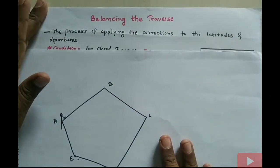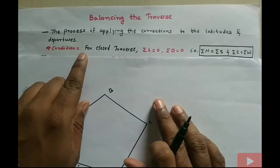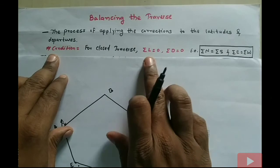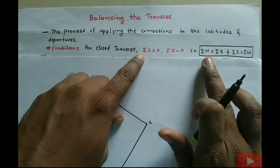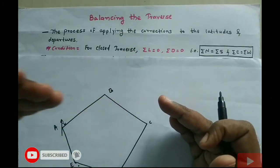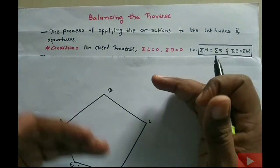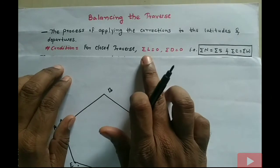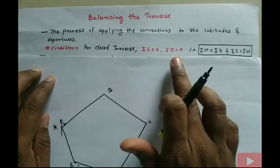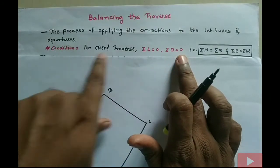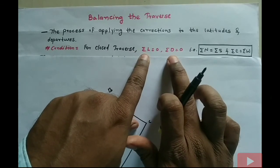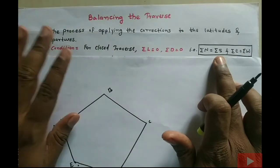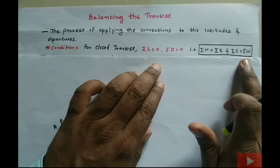There is a general condition for a closed traverse: for all lines of the traverse, the summation of all latitudes (summation of northing + summation of southing) should equal zero, and the summation of all departures should also equal zero. This means summation of northing should equal summation of southing, and summation of easting should equal summation of westing. If this condition is fulfilled, no corrections are needed.